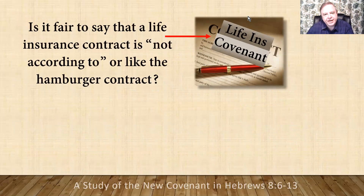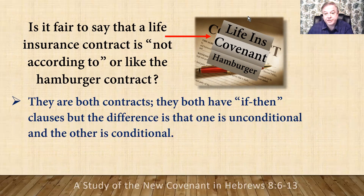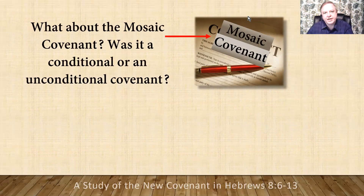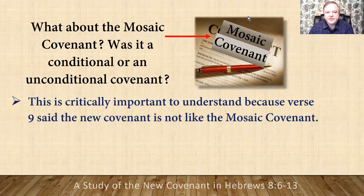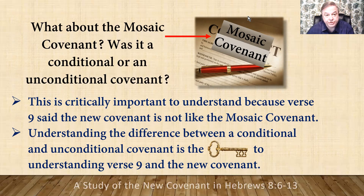Is it fair to say that a life insurance contract is not like the hamburger contract? Well, they're both contracts and they both have if-then clauses, but the difference is that one is unconditional and the other is conditional. So, what about the Mosaic covenant — was it a conditional or an unconditional covenant? This is critically important to understand because verse 9 said the new covenant is not like the Mosaic covenant. Understanding this difference is the key to understanding verse 9 and really understanding the new covenant.